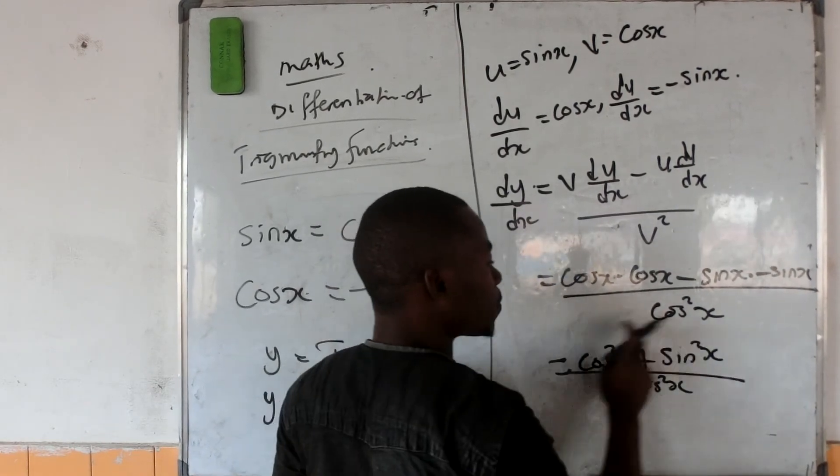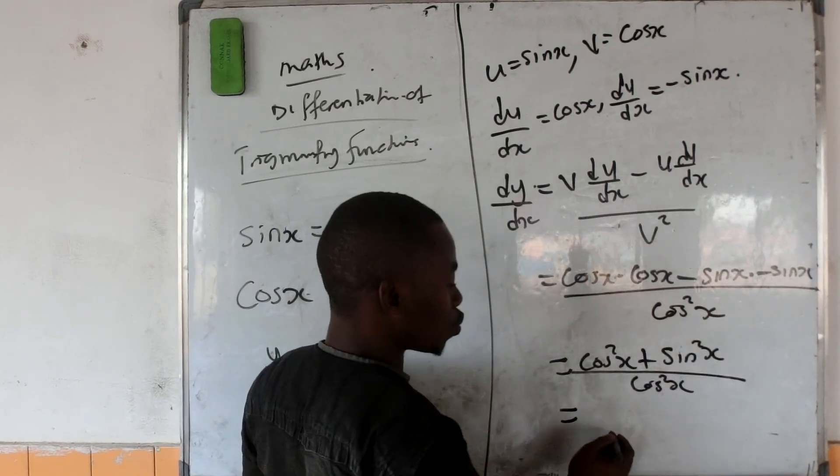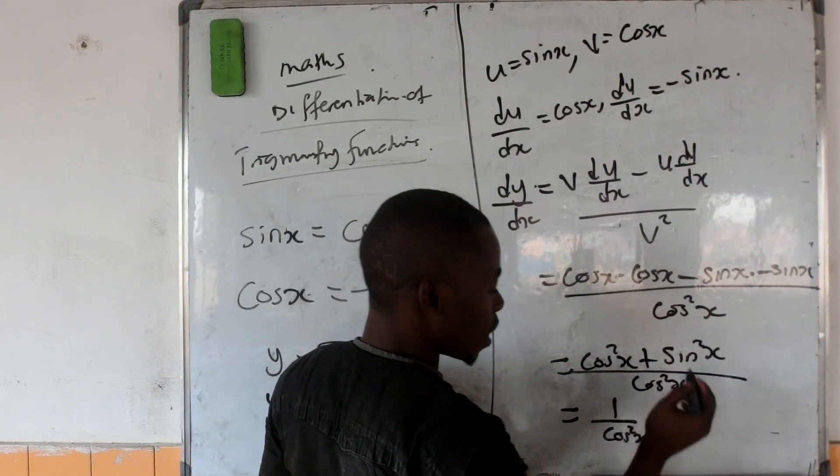And now, cos squared x plus sin squared x is always equal to 1 over cos squared x.